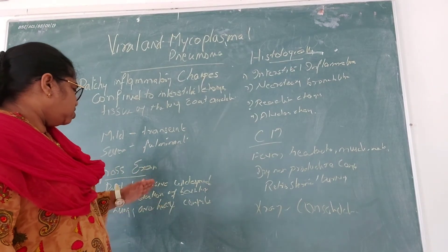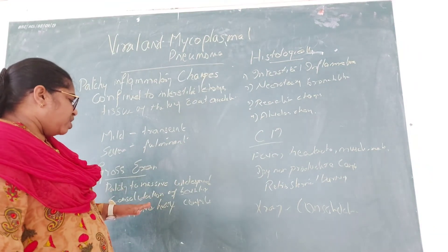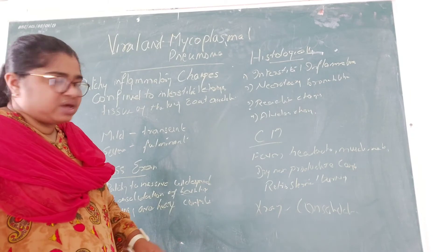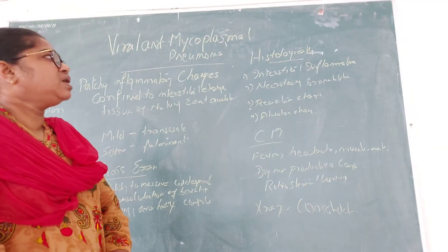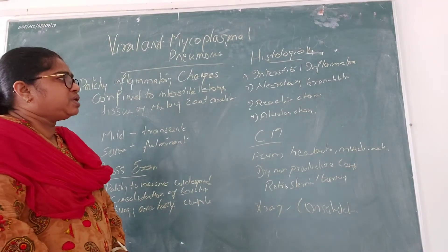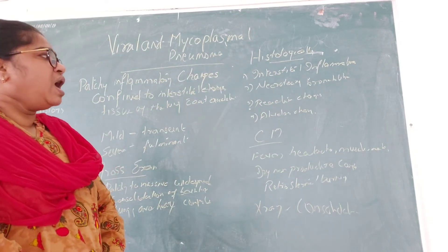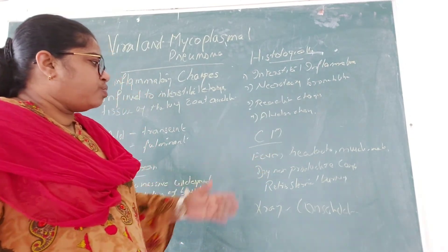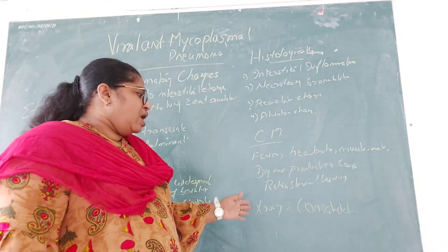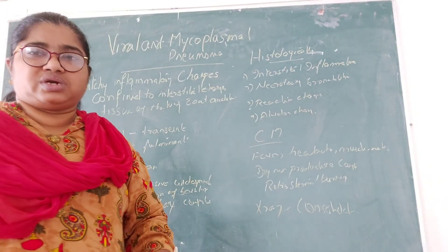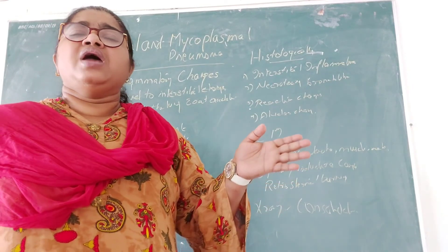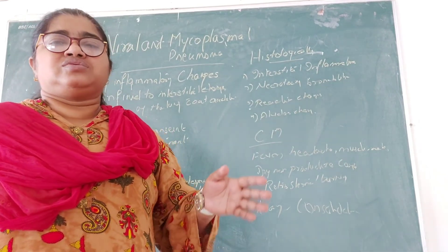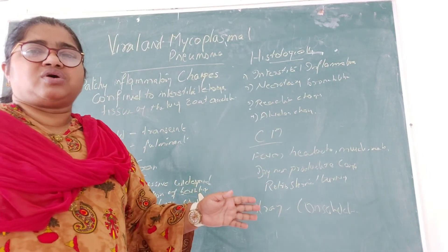We also saw the gross examination — patchy massive widespread consolidation, heavy and congested lungs. Histologically, there are four changes: interstitial inflammation, necrotizing bronchitis, reactive changes, and alveolar changes. Clinical features include fever, headache, dry non-productive cough, and retrosternal burning, with X-ray showing consolidation. Blood samples and blood cultures need to be sent to confirm the infection.